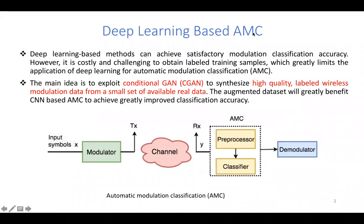Deep learning-based methods can get good modulation classification accuracy; however, it is costly to get labeled training samples. In this paper, our idea is to use conditional GAN to synthesize high-quality labeled wireless modulation data.